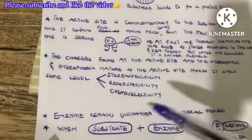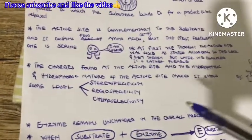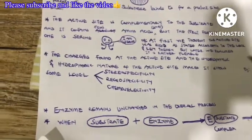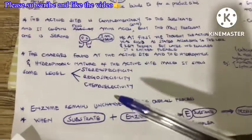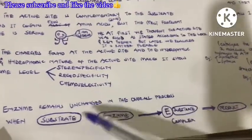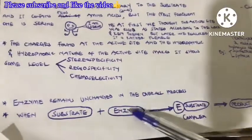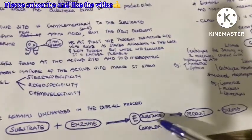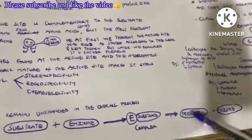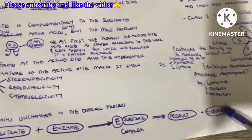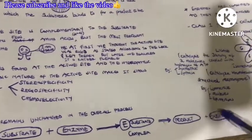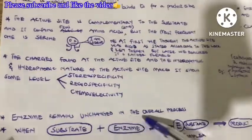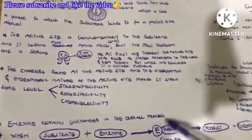Enzymes actually remain unchanged in the overall process. So where they are converting substrate to products, they remain unchanged. A substrate will bind to the active site of an enzyme, an enzyme-substrate complex will be formed, the enzyme will work on the substrate, the product will be formed, and we will get our enzyme back.